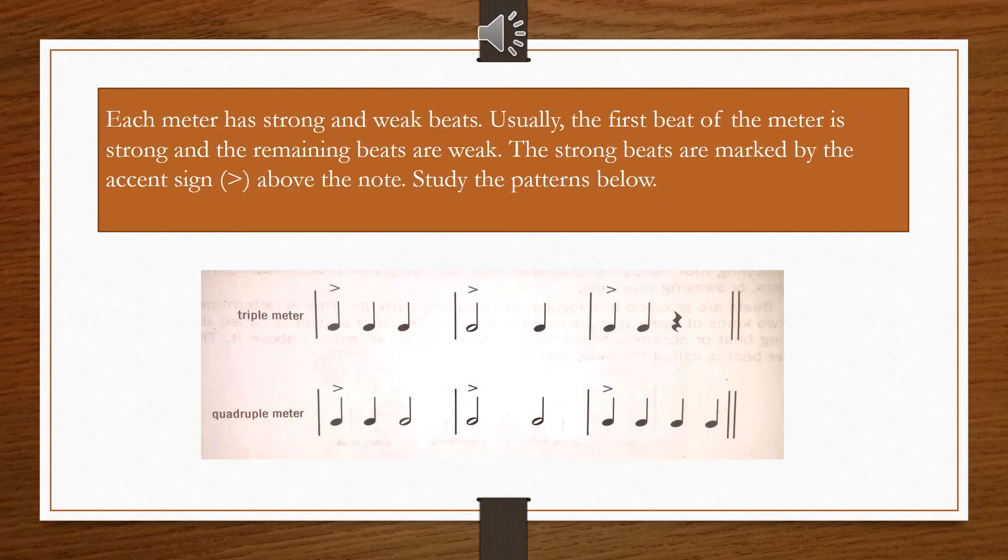Each meter has strong and weak beats. Usually, the first beat of the meter is strong and the remaining beats are weak. The strong beats are marked by the accent sign above the note. Study the patterns below.